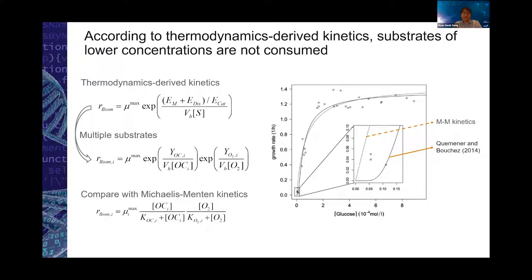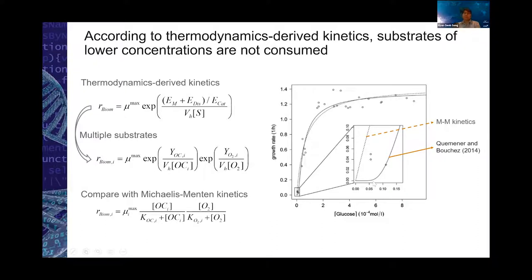This equation can be extended to include multiple components — organic carbon and oxygen. The stoichiometric coefficients Y_OCI and Y_O2I are fully determined by the thermodynamic theory discussed in previous slides. This may not be the form you are familiar with — you may be more familiar with Michaelis-Menten kinetics. The typical sigmoidal curve relationship between growth rate and substrate concentration looks very similar between the two approaches. These are experimental data fitted to thermodynamics-derived kinetics versus Michaelis-Menten kinetics — not very different overall. But a key difference is that Michaelis-Menten kinetics shows the growth rate can monotonically increase as substrate concentration increases, whereas this new kinetics shows that if substrate concentration is below a certain threshold, cells cannot utilize it — they are not very interested in substrates below that threshold.